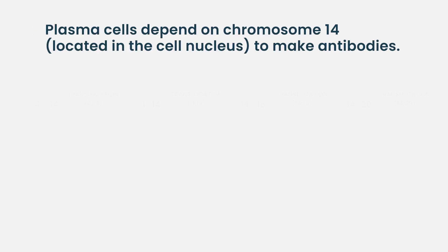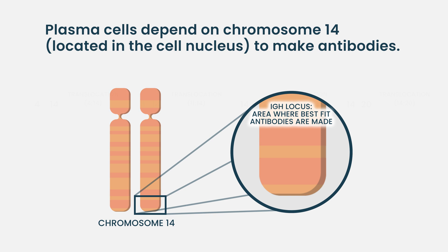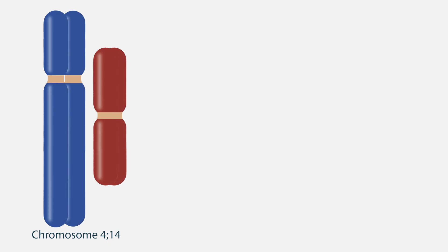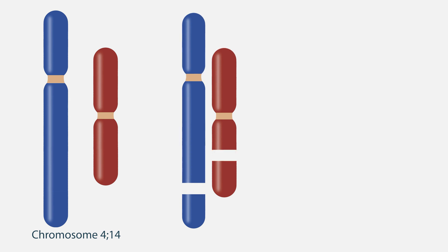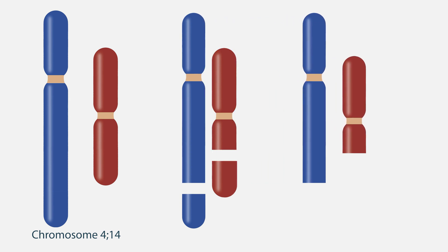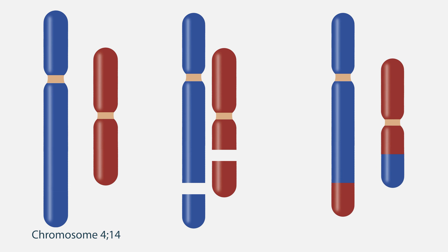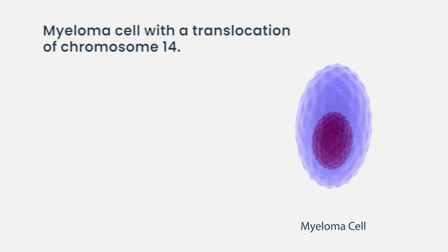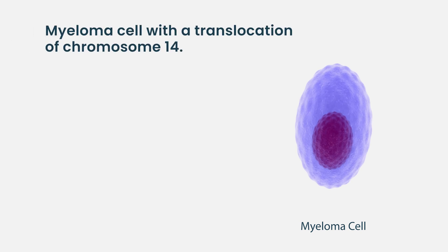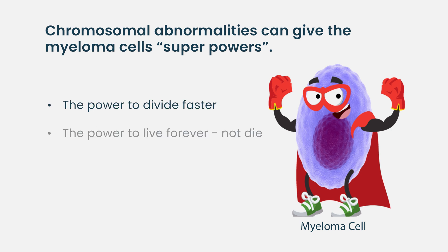So chromosome 14 is of prime interest in these cells. They will look there for how to make antibodies and will need to cut and paste pieces of DNA. Nothing in life is 100% — mistakes happen. So the part of chromosome 4, for example, in the T4;14 translocation, should have never come next to the chromosome 14 part. It's an error, a random event that rarely happens. But when it happens, it gives the myeloma cell superpowers: the power to divide faster and the power to not die when it reaches the end of its lifespan.